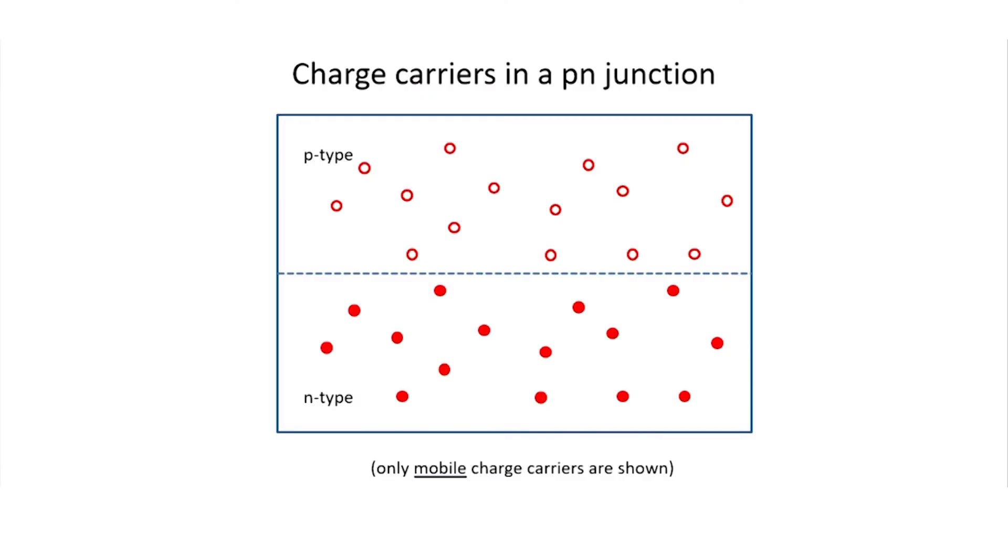I'll show you what happens when we bring together a piece of n-type silicon with a piece of p-type silicon. So imagine that down here, we've got a piece of silicon material that's been doped with some phosphorus, and up here, we've got some silicon that's been doped with some boron.